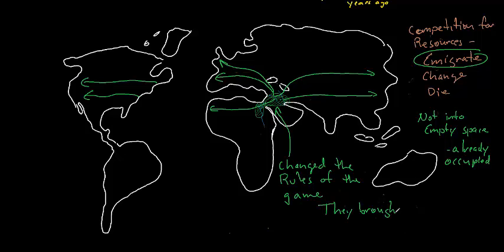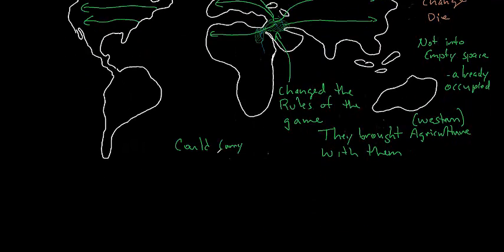They brought agriculture with them. Spreading north and south was much a slower process because when you tried to take your crops and your animals into different biomes, they didn't survive as well, so this took much longer.